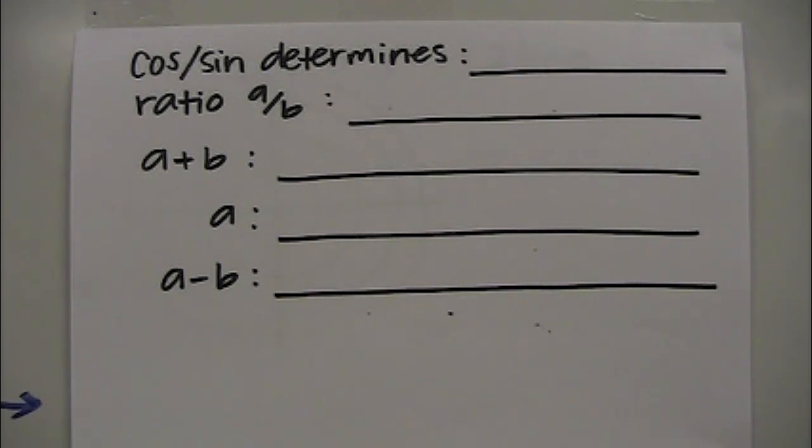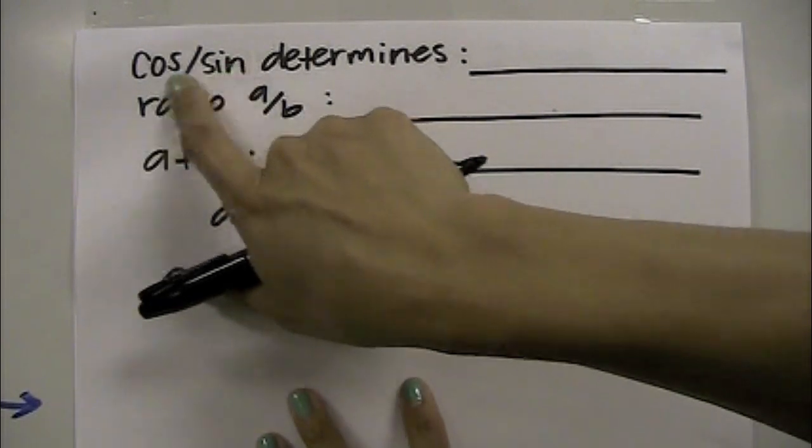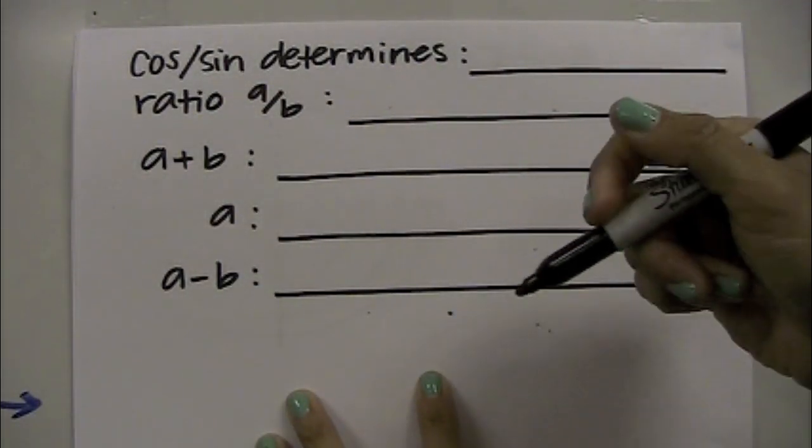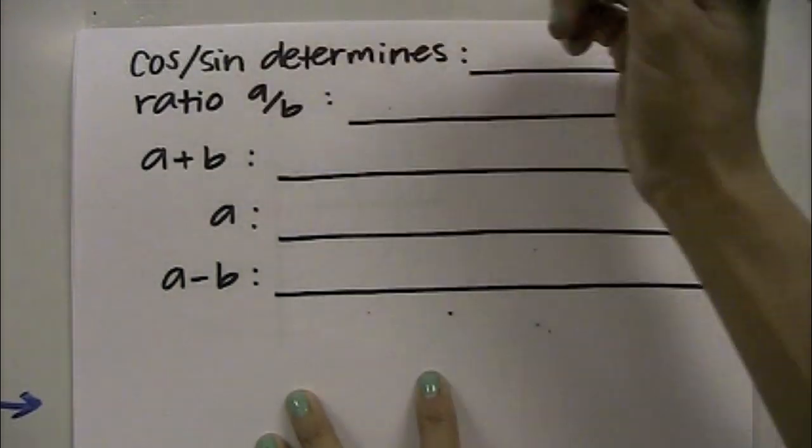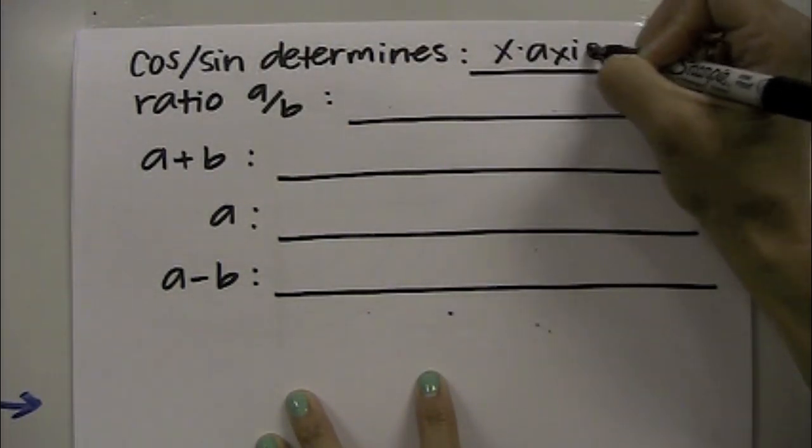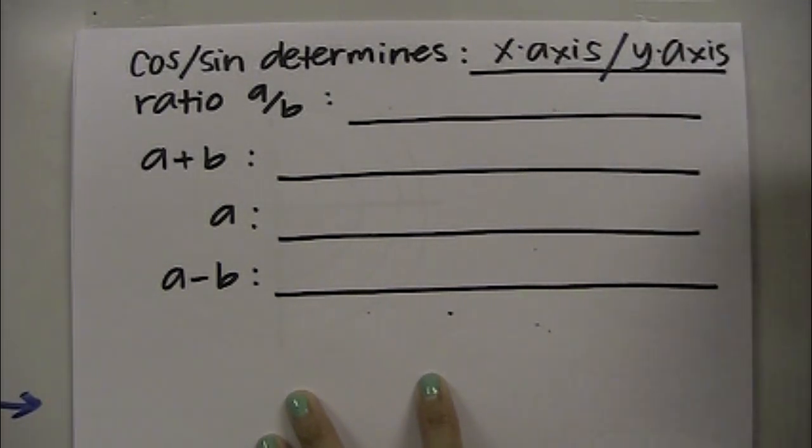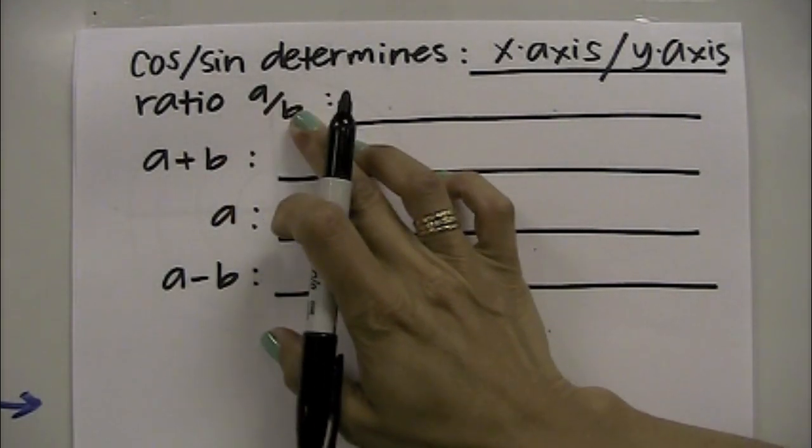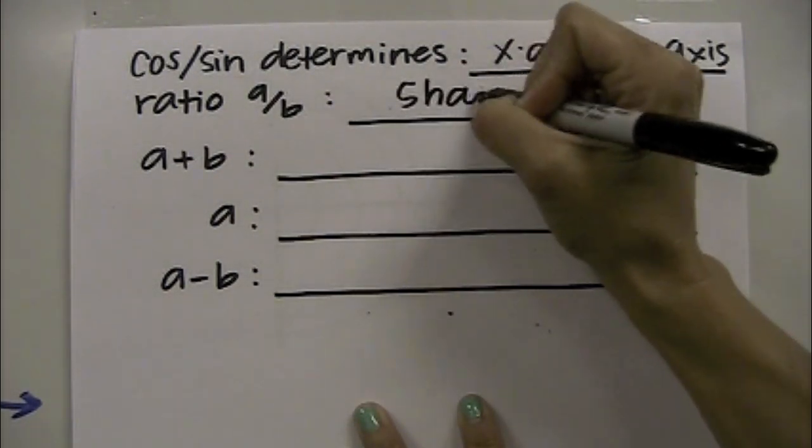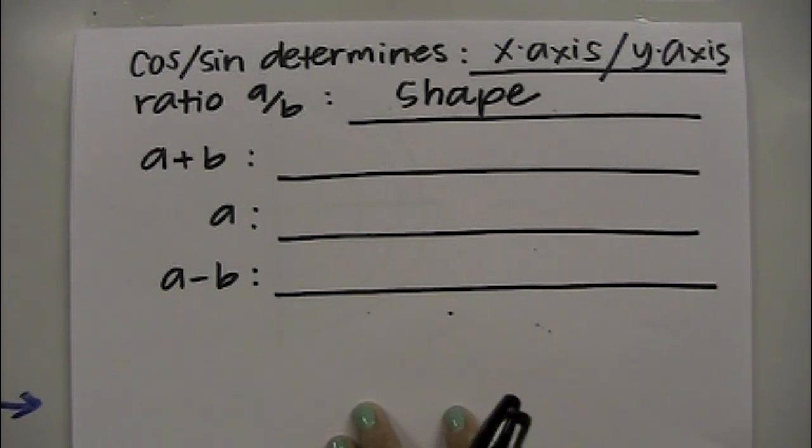If I were to look at an equation to actually graph, we could definitely do it by creating a theta r chart or an r theta chart and plotting points, or we can use the shortcut. Sine or cosine determines which axis you're falling along. If it's cosine, you're going to be along the x-axis. Sine it will be along the y-axis. The ratio a over b determines the shape. Your four options: inner loop, cardioid, dimple, or convex.